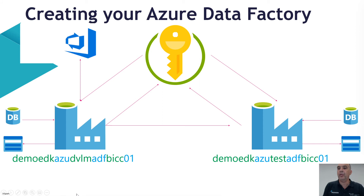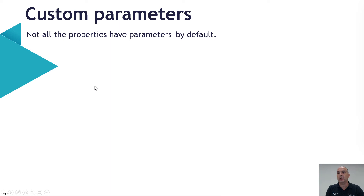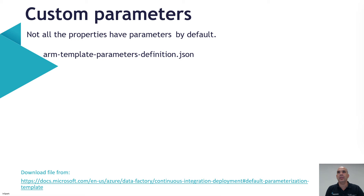Going back to the presentation. What we've done is create the key vaults and data factories, create the connections through DevOps to our SQL database and blob storage, and integrate them with the Azure Key Vault environment. But that's not everything. The next step is we can also use custom parameters, because not all properties are set by default in the ARM template. If you want to use, for example, a data lake, you need to add some parameters in a specific file called the ARM template parameter definition file.